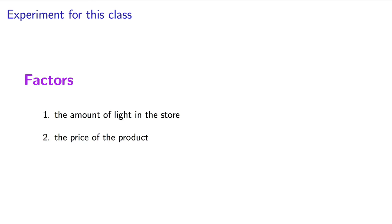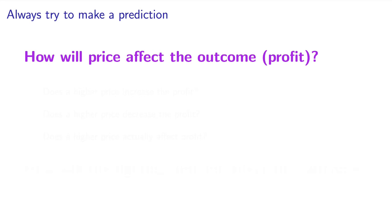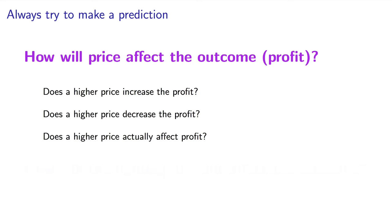The second factor we are going to consider in the experiment is the price of the product. We could sell the product for $7.79 or we could sell the product for $8.49. This again is a numeric variable. Try to predict what the effect of price is going to be on the outcome. Do we expect a higher price to increase the profit? Do we expect a higher price to maybe decrease the profit? Or is it possible that a higher price has no effect on the profit?